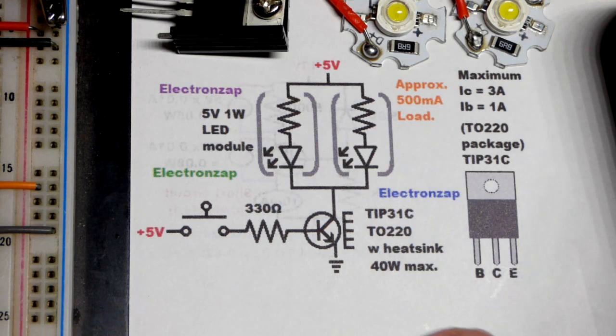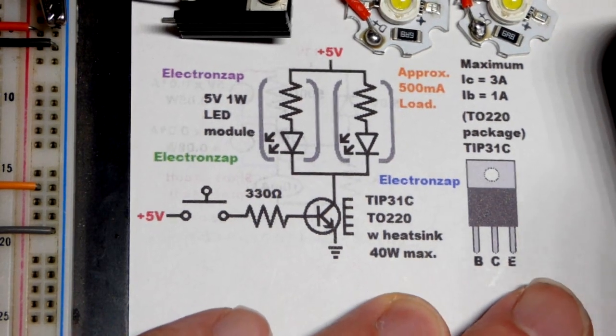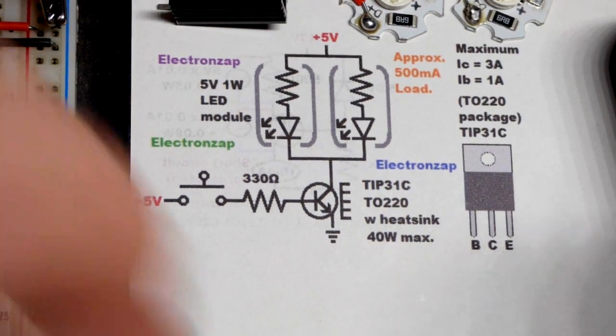I've been using the 2N NPN bipolar junction transistors like the 2N2222 and the 2N3904.